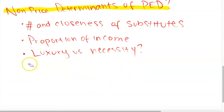The next determinant is whether the good is a luxury or a necessity. A necessity is more likely to have inelastic PED because it is indispensable. Whereas a luxury good like an expensive handbag not only represents a greater proportion of income but is also non-essential, making it more likely to be relatively PED elastic.